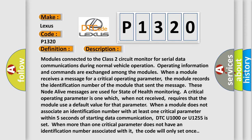Modules connected to the Class 2 circuit monitor for serial data communications during normal vehicle operation. Operating information and commands are exchanged among the modules. When a module receives a message for a critical operating parameter, the module records the identification number of the module that sent the message. These node alive messages are used for state of health monitoring.